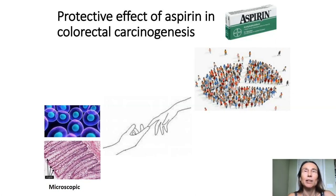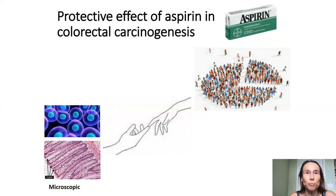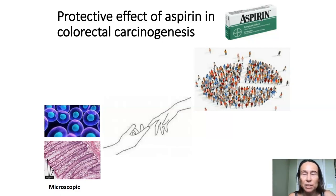This work encompasses two very different spatial scales. One is microscopic — what happens inside cells, how mutations happen, how evolution proceeds inside small compartments in an organ. On the other hand, we have the scale of populations of people, epidemiology, cancer epidemiology. It turns out that there is a very clear connection between the processes that happen on the microscopic scale of cells and the epidemiology of cancer.